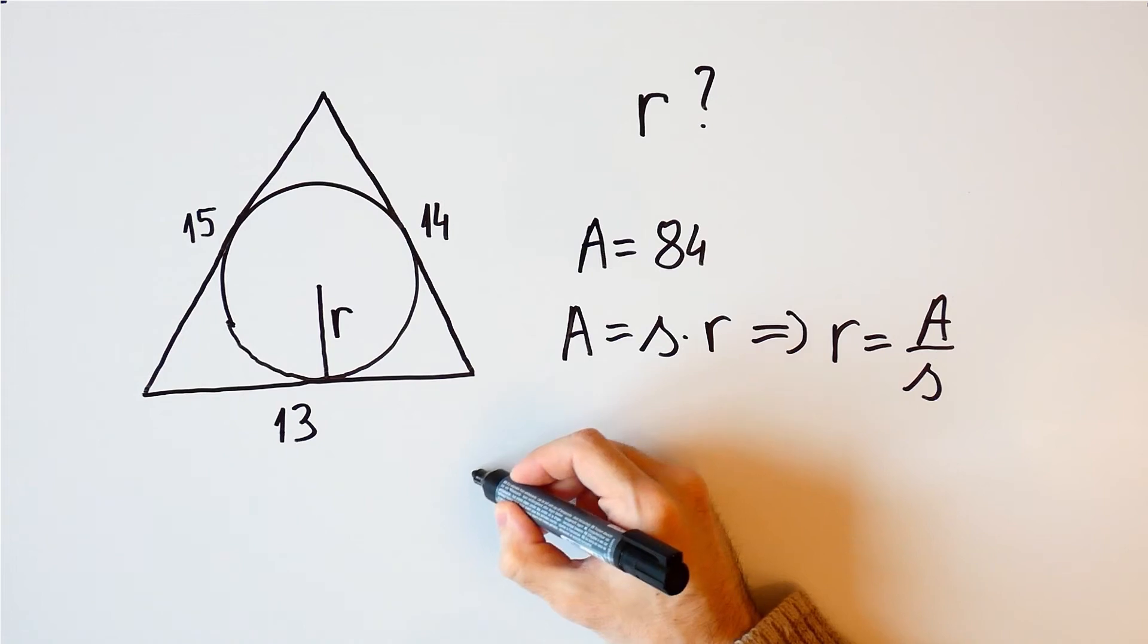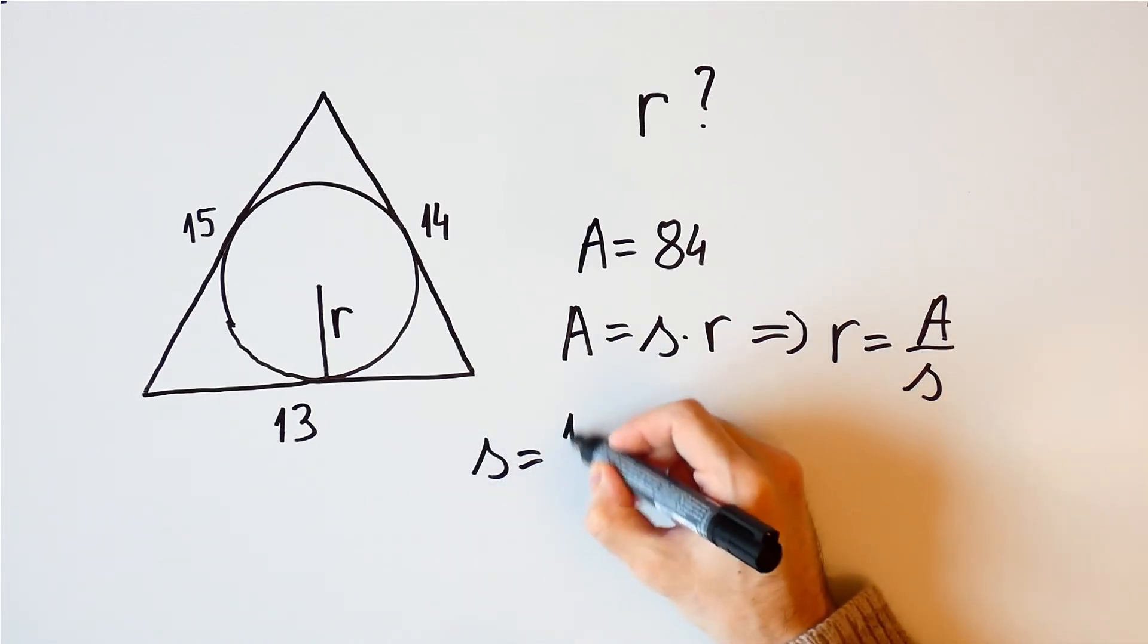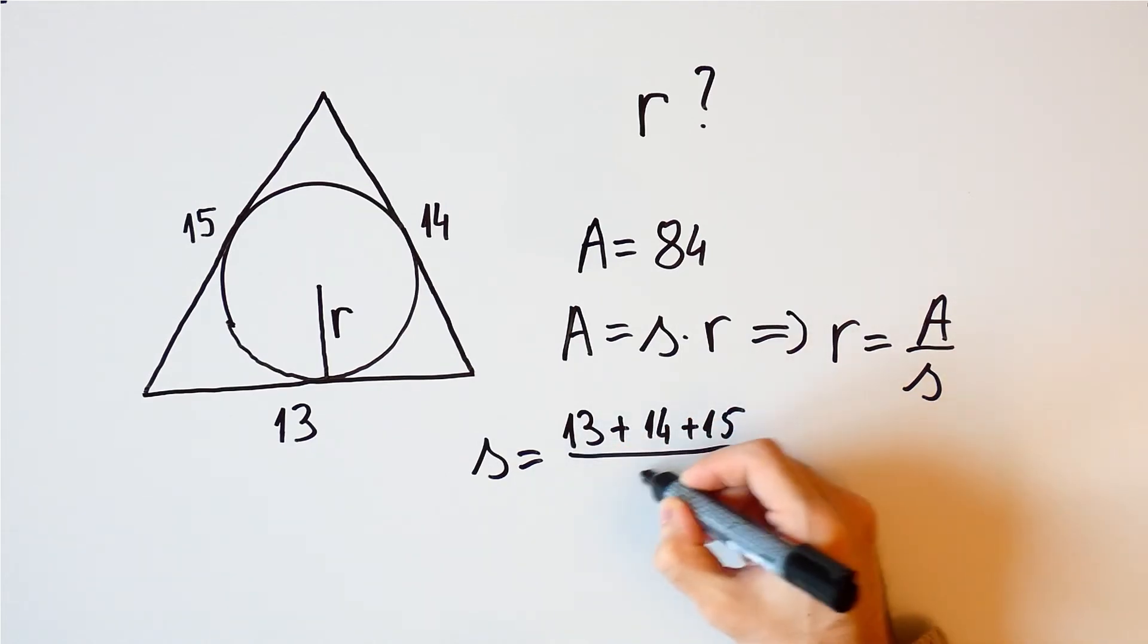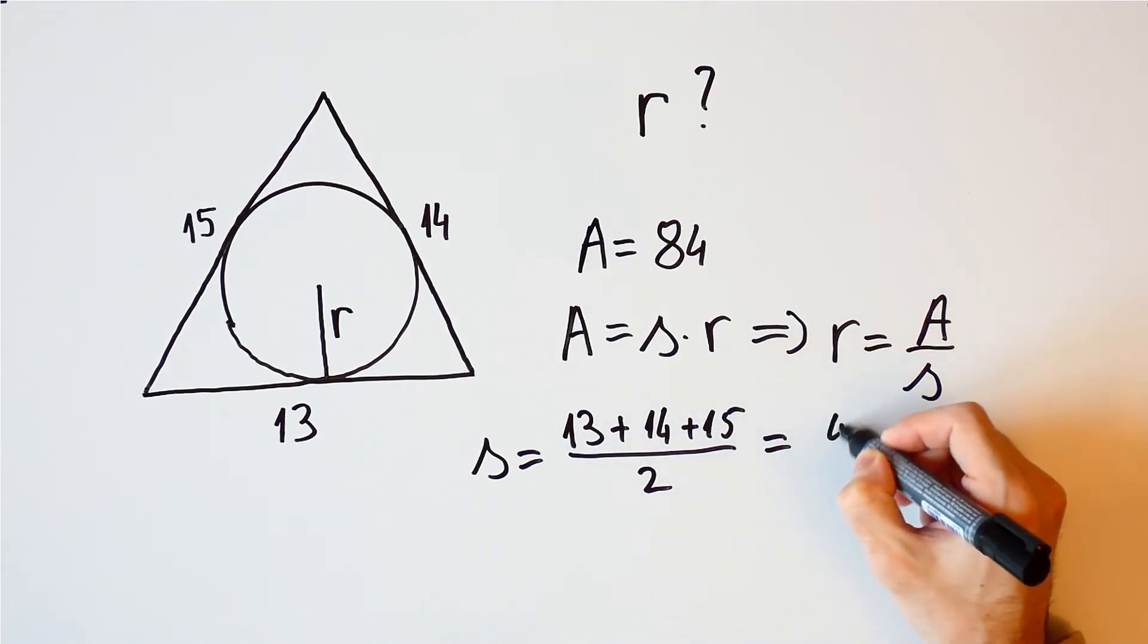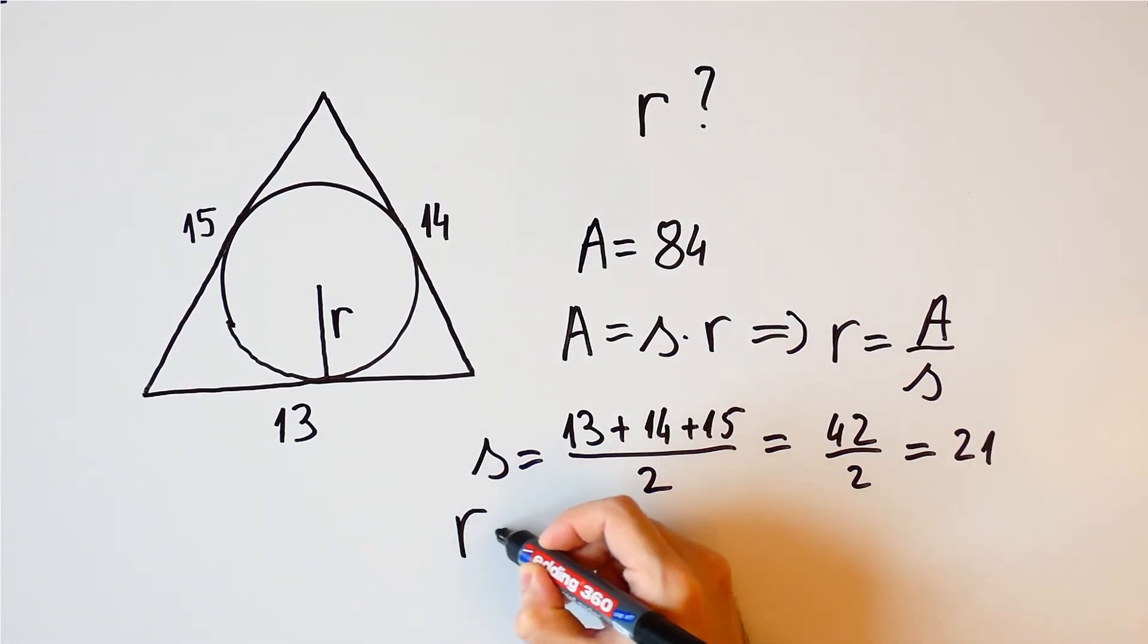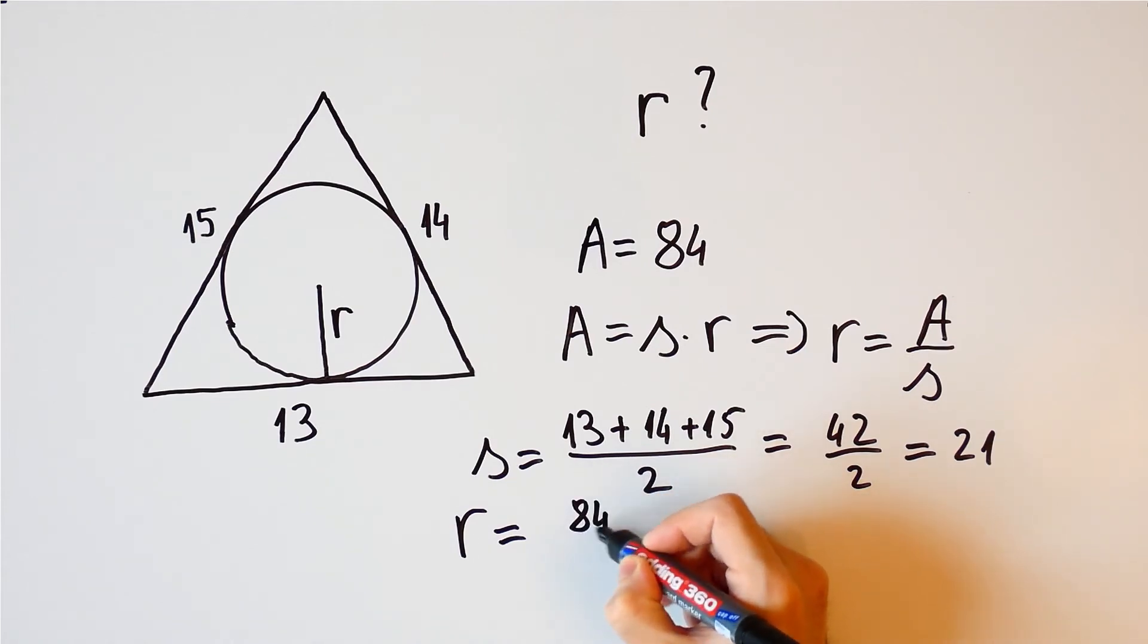And in this case, the semi-perimeter is equal to 13 plus 14 plus 15 over 2, which is equal to 42 over 2, and that is equal to 21. And the inner radius is now equal to 84 over 21, which is equal to 4.